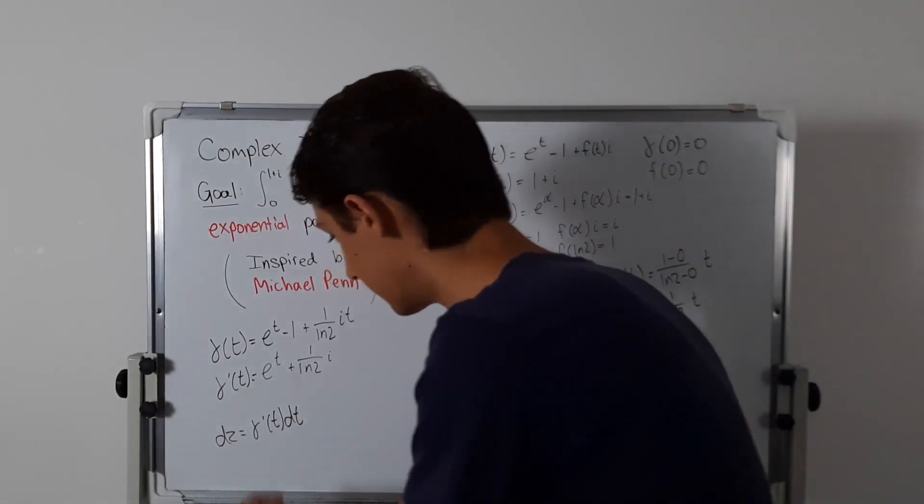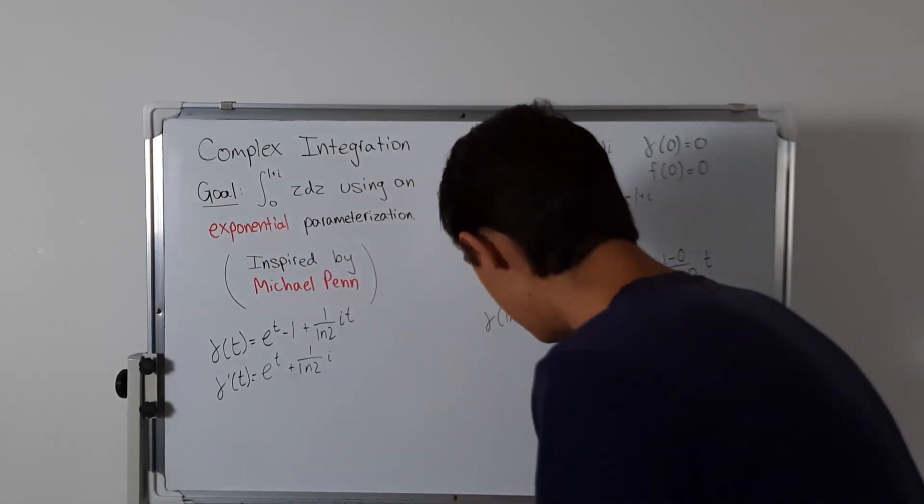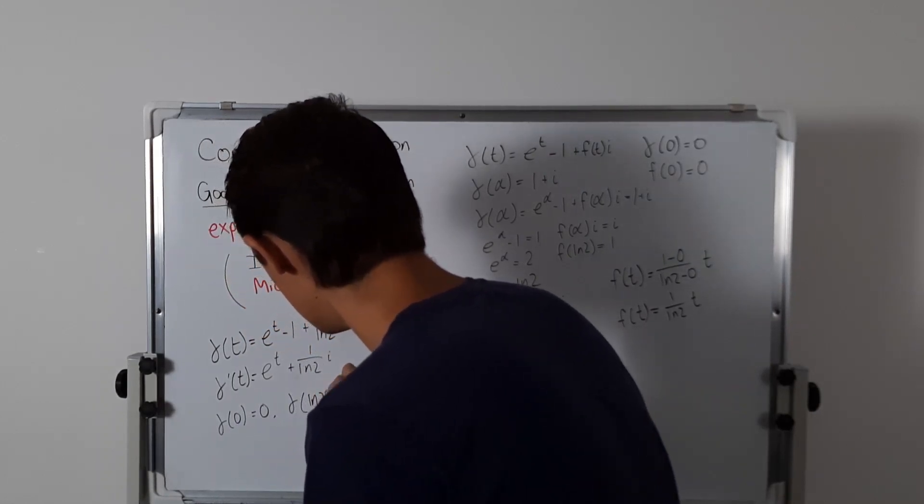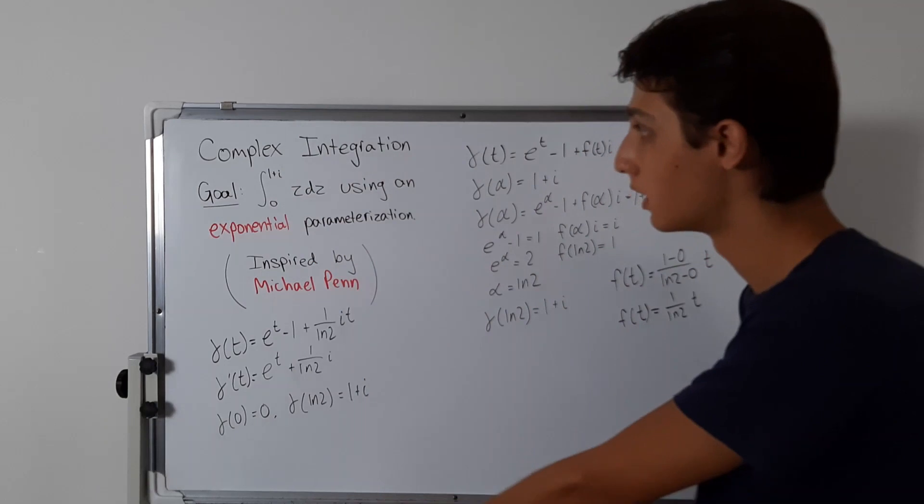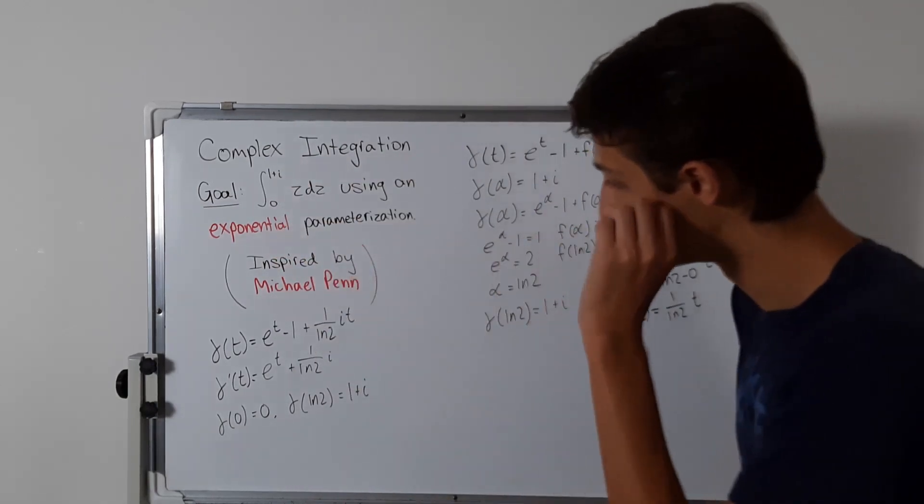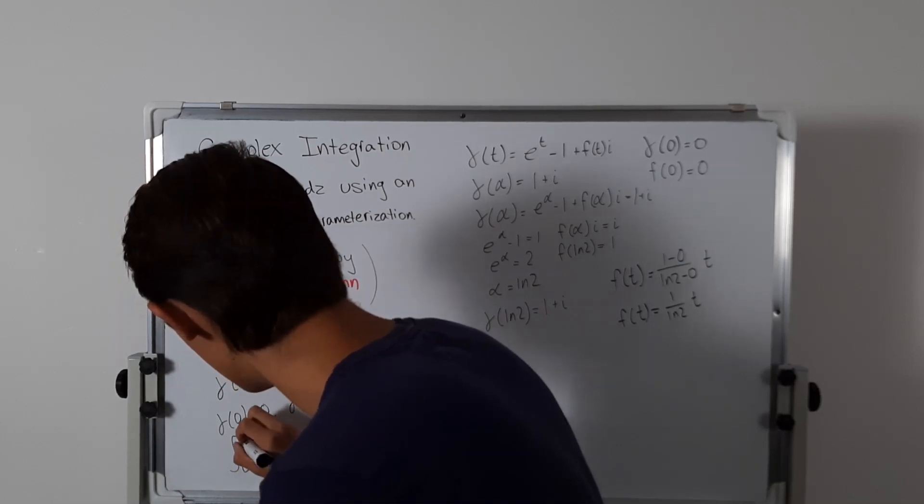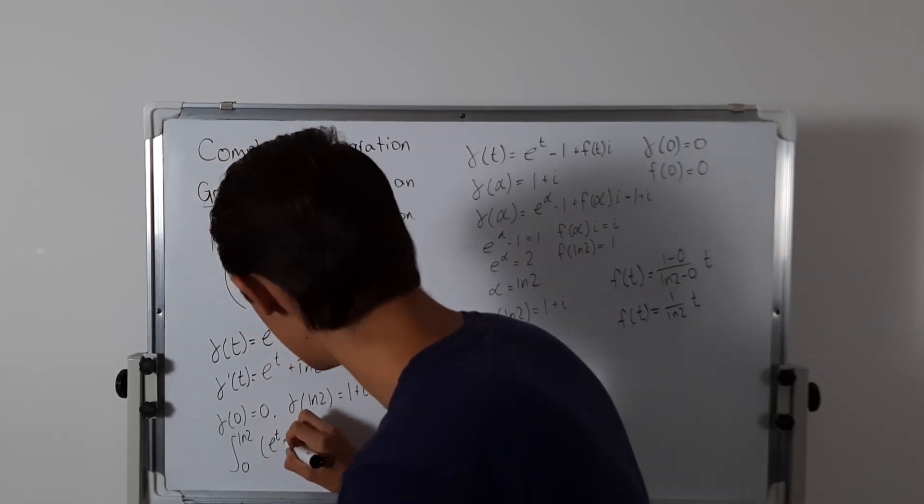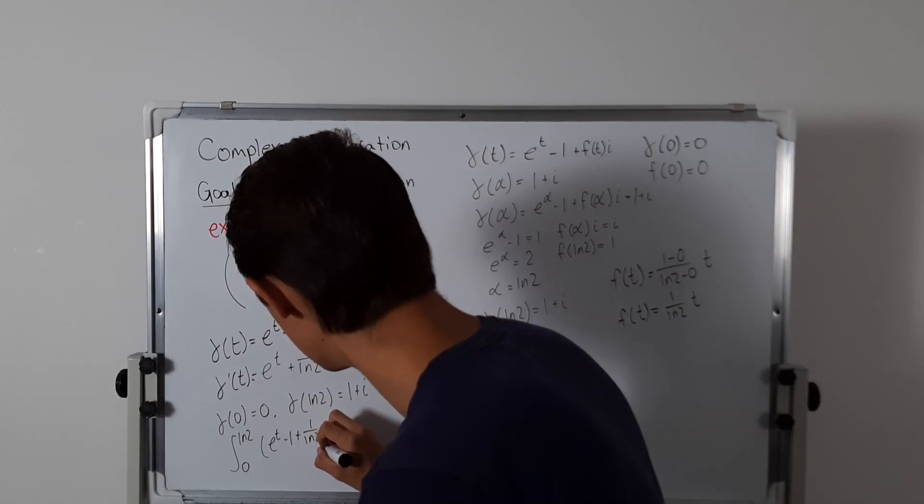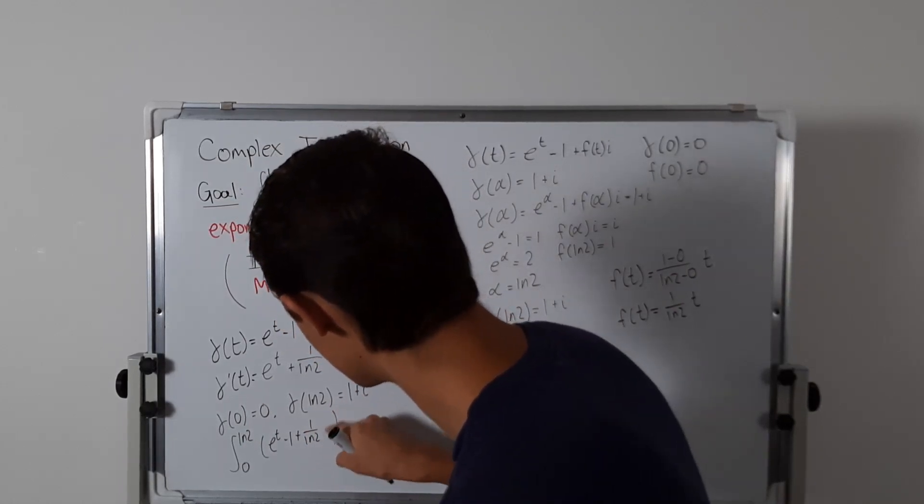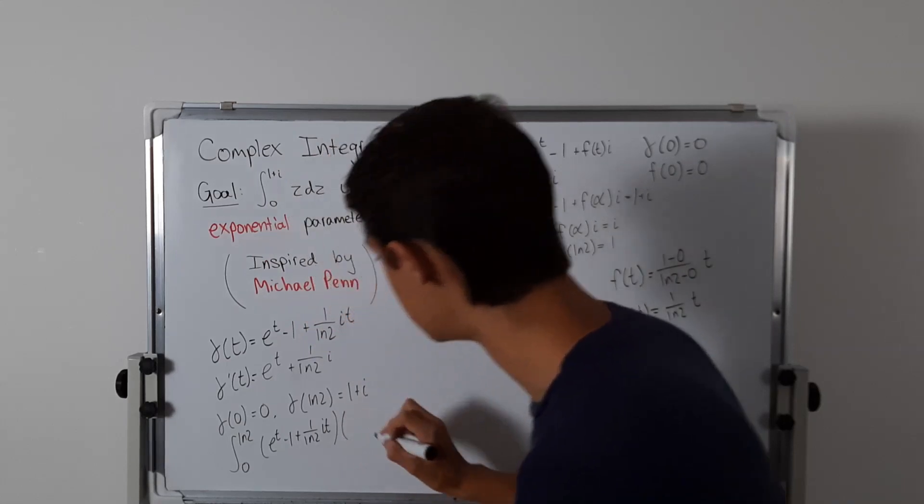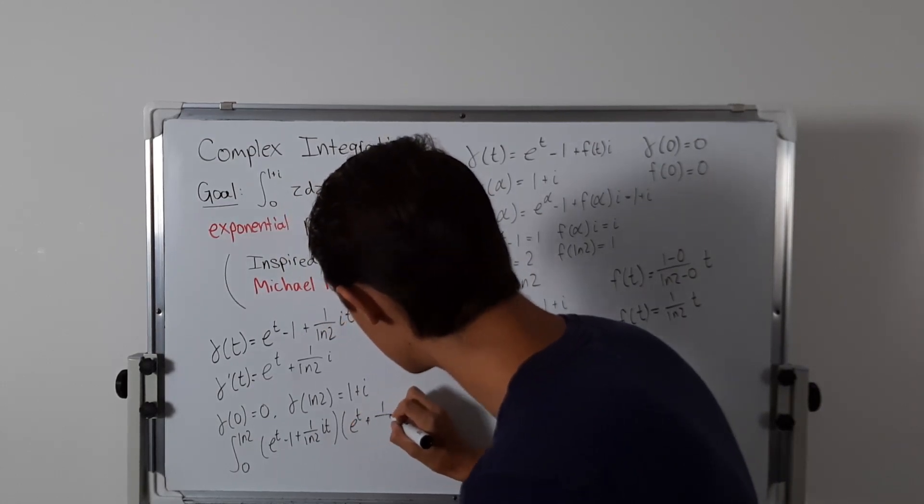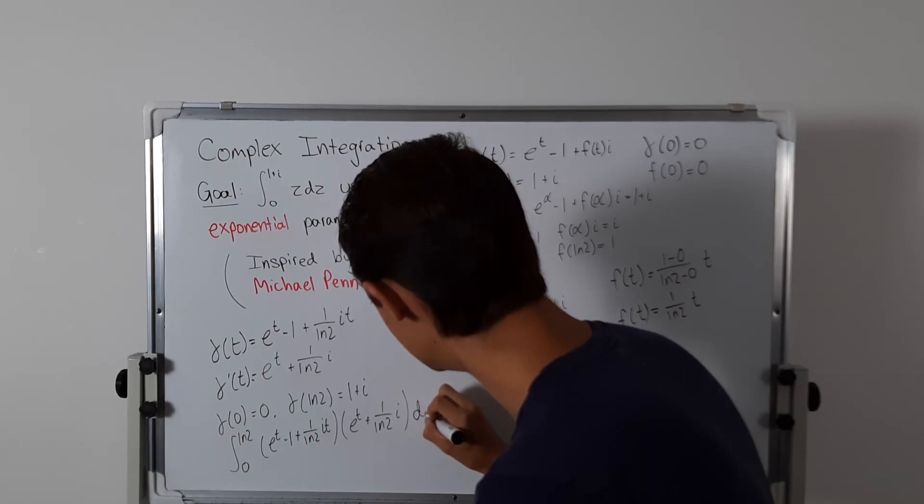We also have that gamma of 0 equals 0, and gamma of ln of 2 equals 1 plus i. So then from here, instead of going from 0 to 1 plus i of z dz, we're going to have the integral from 0 to ln of 2 of this monstrosity: e to the t minus 1 plus 1 over ln 2 times i t, times gamma prime, e to the t plus 1 over ln 2 times i, then dt.